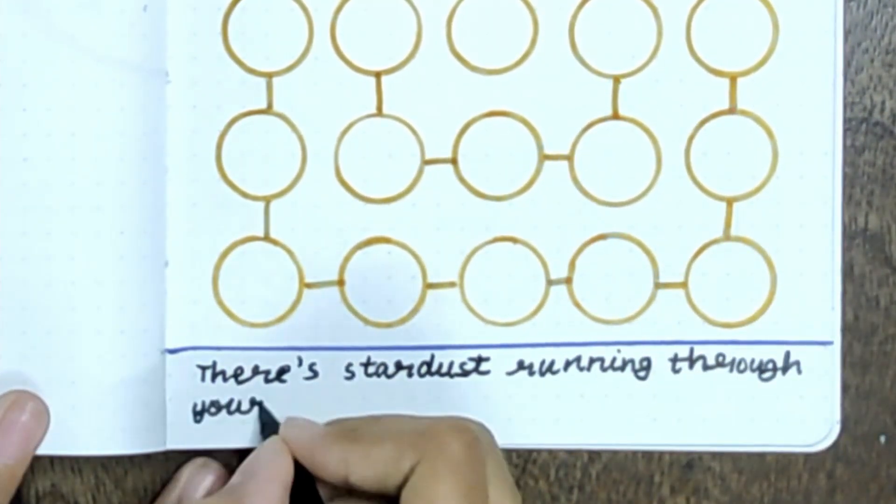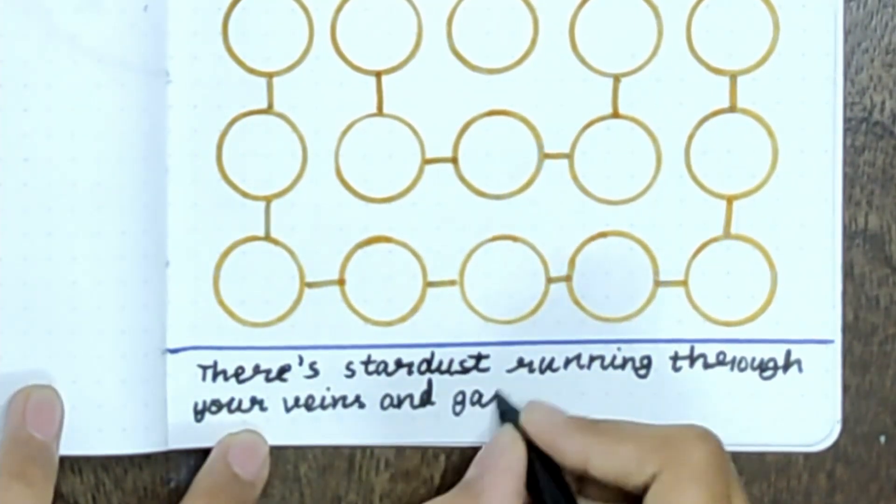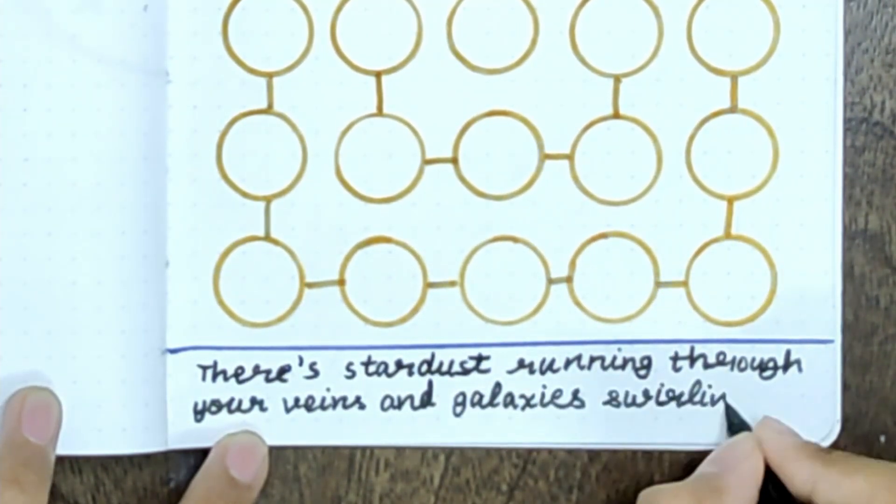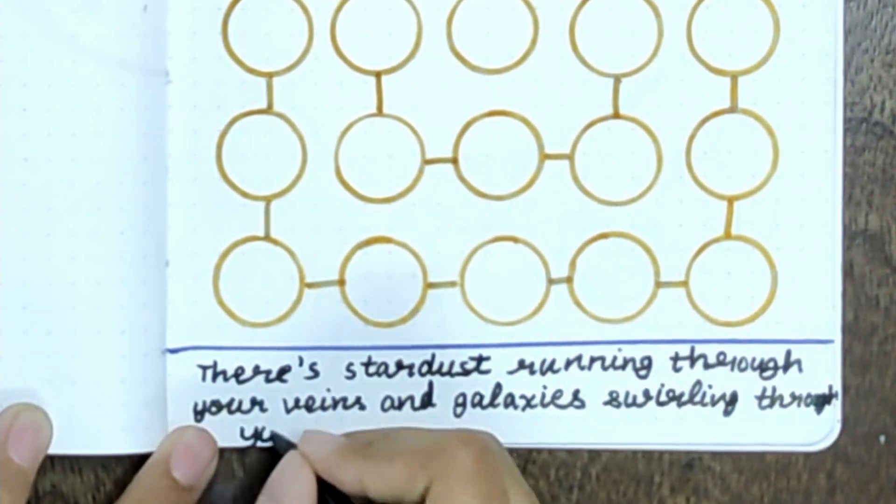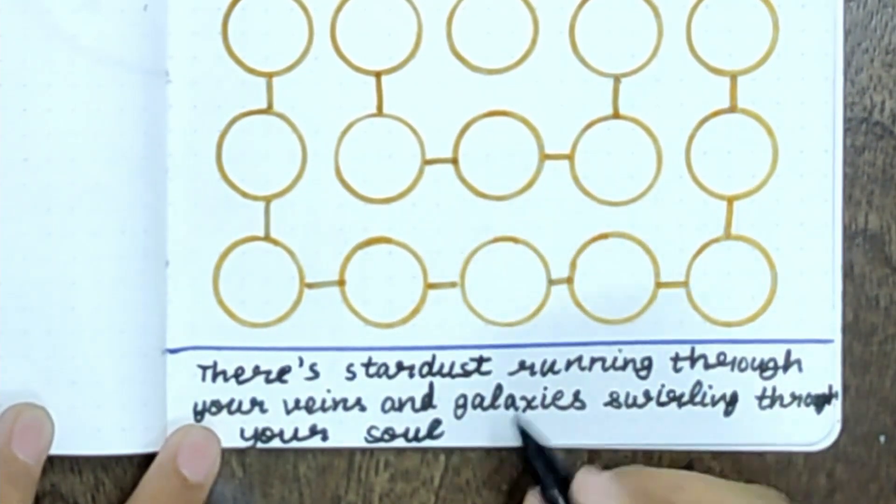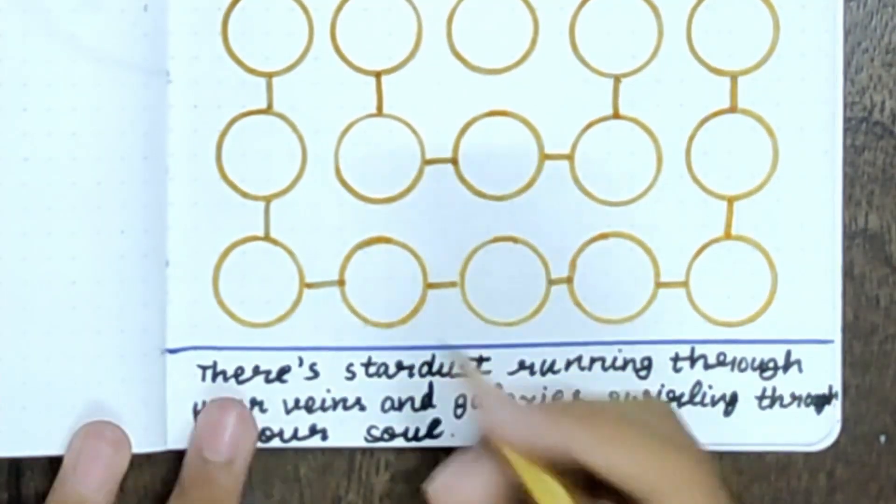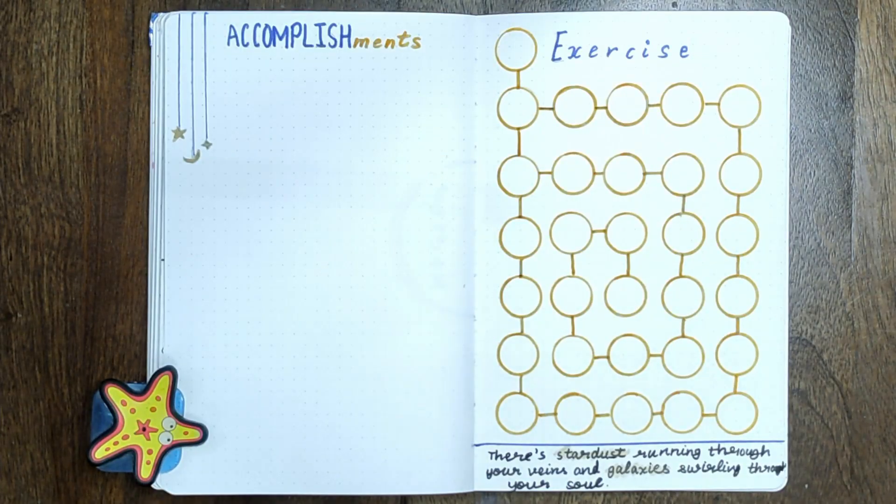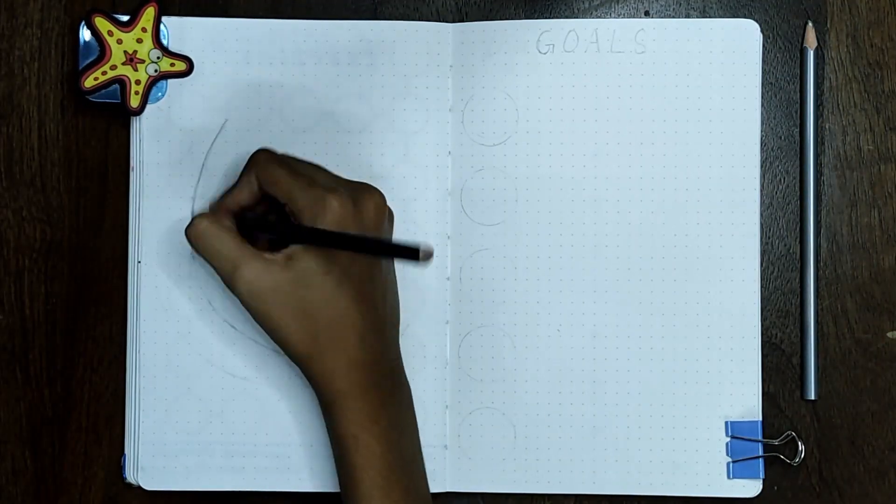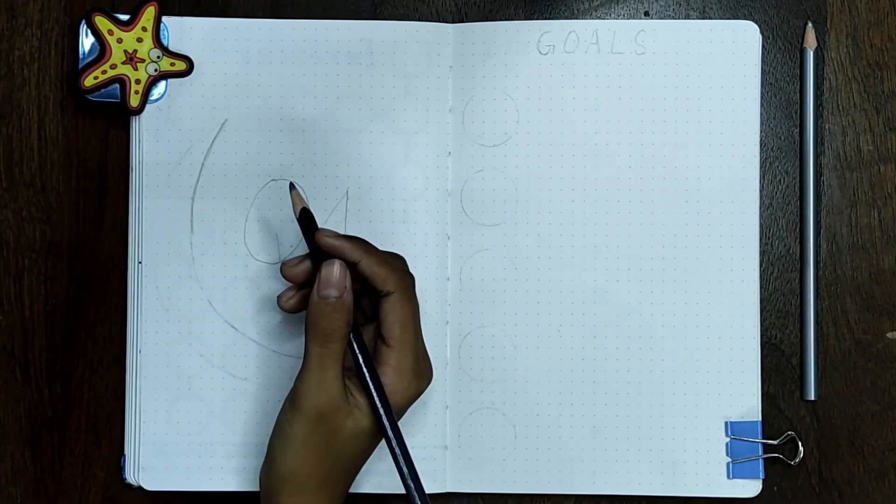So the reason I included an exercise tracker is that I really felt I wasn't exercising enough and working out, so having a tracker probably should help me be consistent with that. On the bottom, I just wrote a quote: 'There's stardust running in your veins and galaxies swirling through your soul,' which is a really fun and interesting quote and kind of motivating as well.